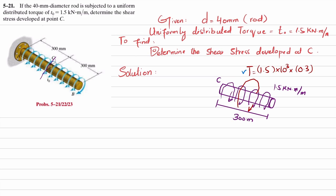This gives the total torque acting at the section. At point C, there will be a reactive torque acting in the counterclockwise direction. So the torque at C equals 1.5 × 10³ multiplied by 0.3, with units of newton·meter.